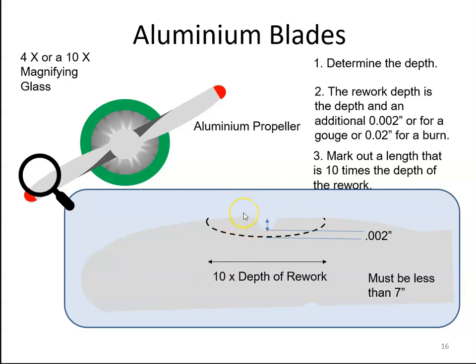You get your needle file out and you blend in. It probably doesn't look blended there, but I hope you get the idea. You blend in the repair and we shouldn't get any stress concentrations. Therefore, we shouldn't get any cracks propagating. So we do that on the leading edge and the trailing edge. The thing to remember is it is ten times the depth and less than seven inches.